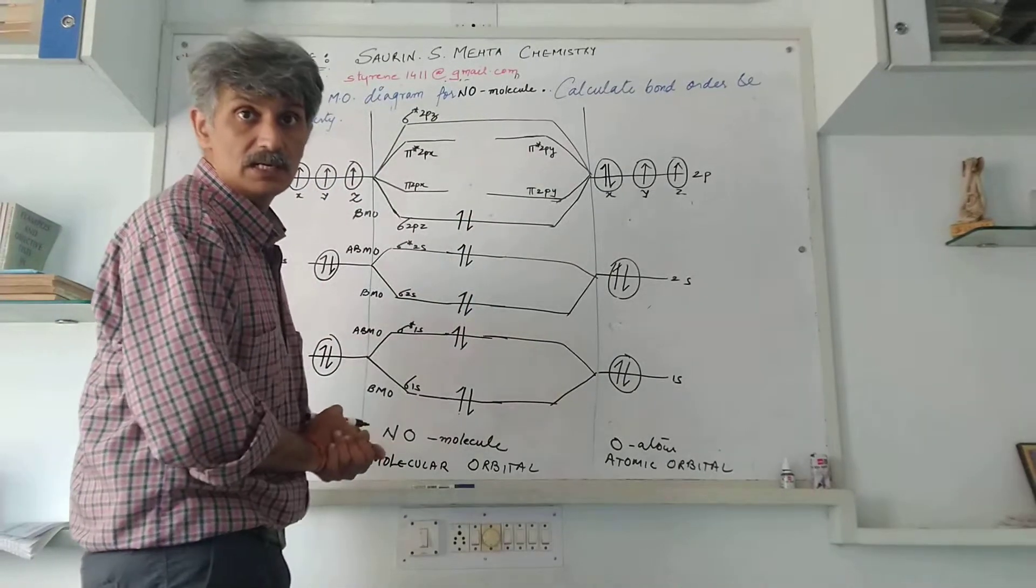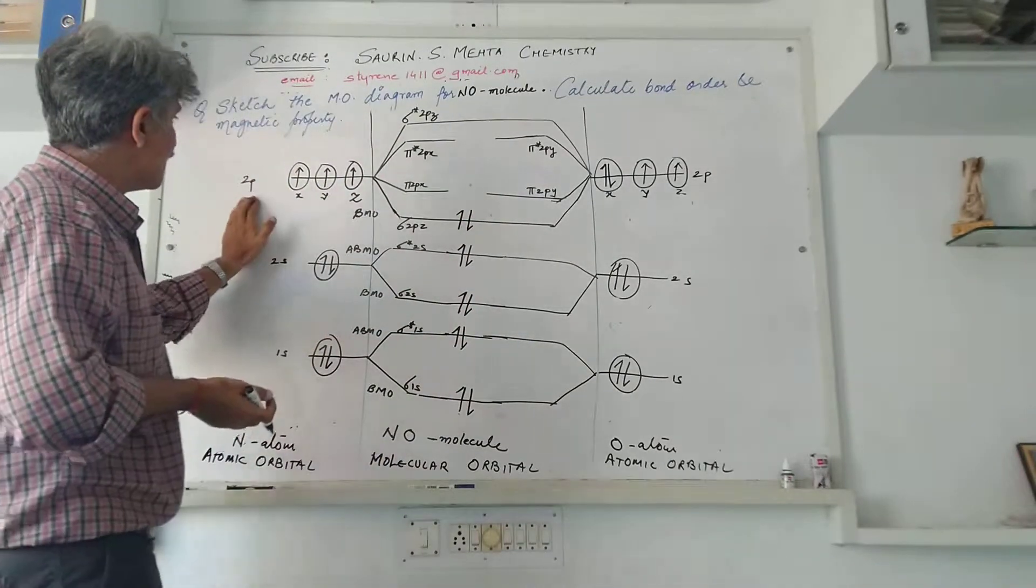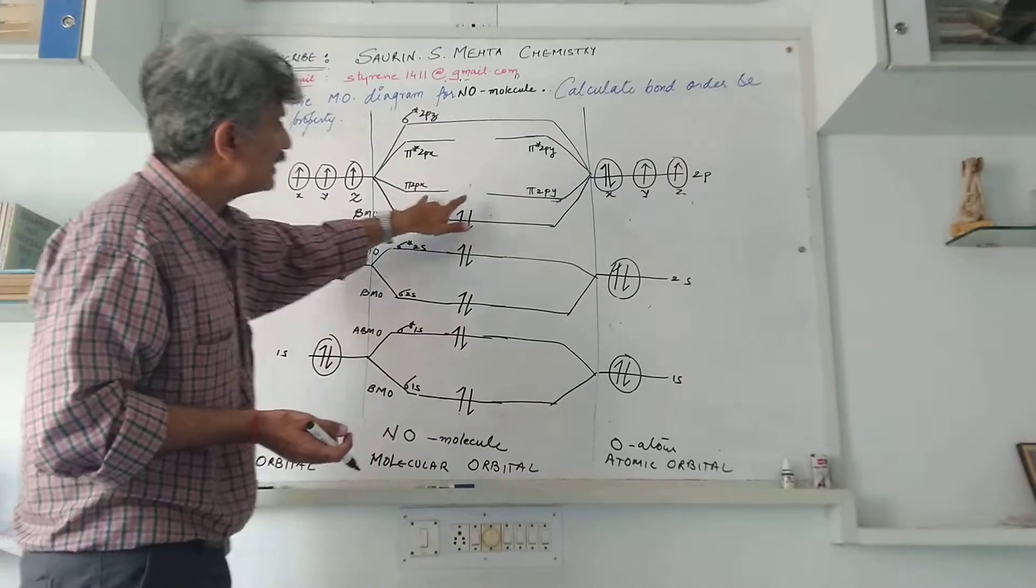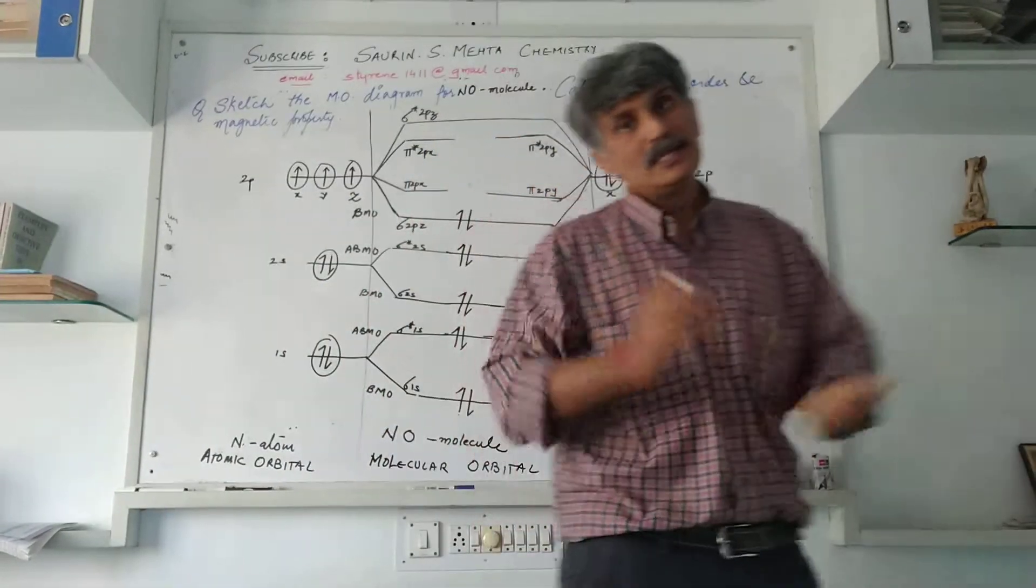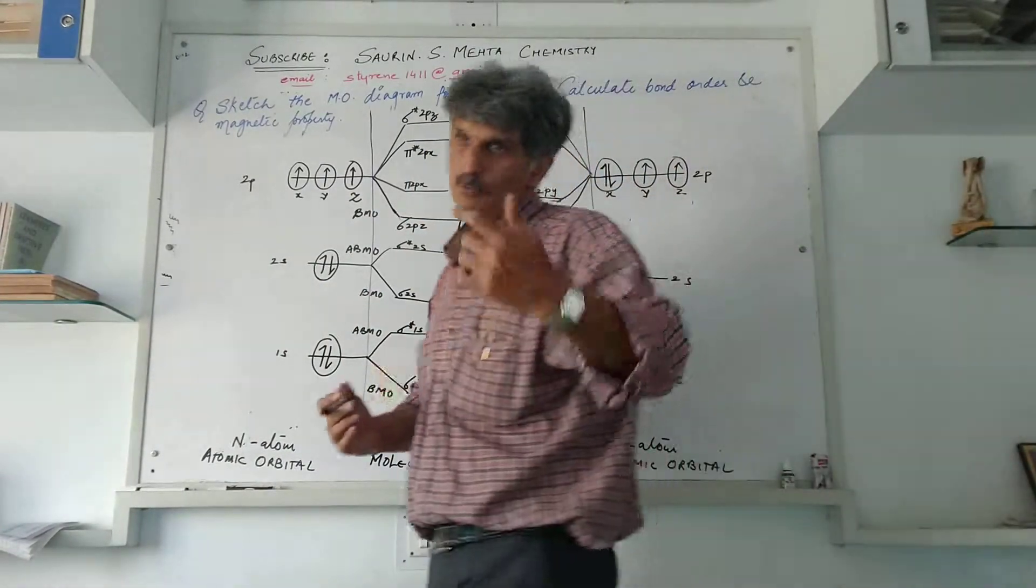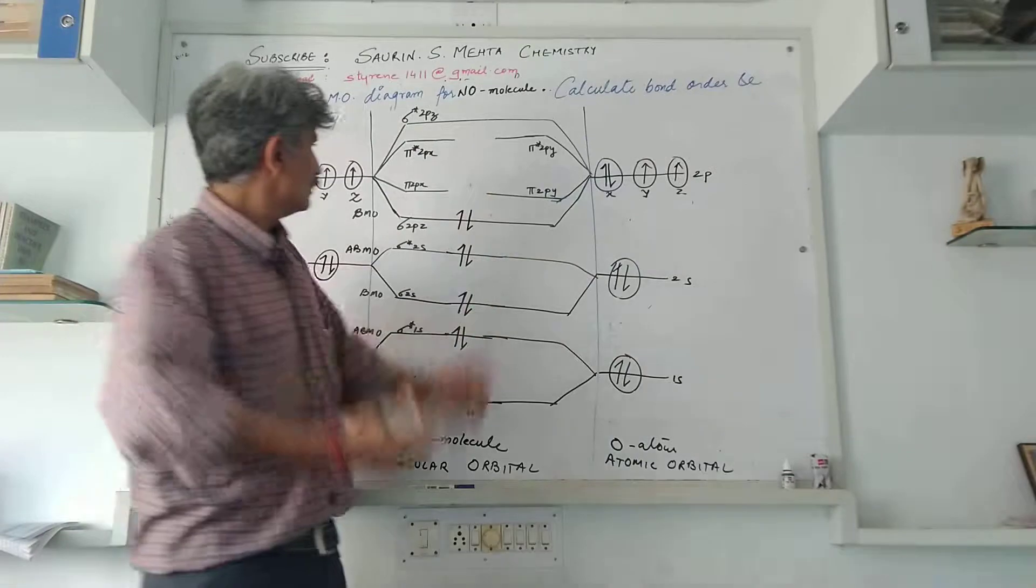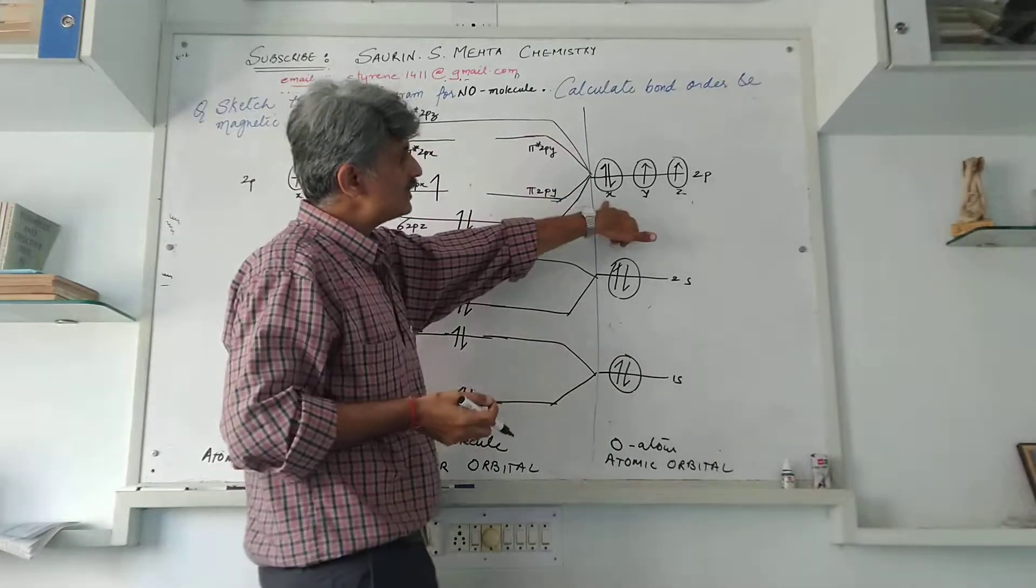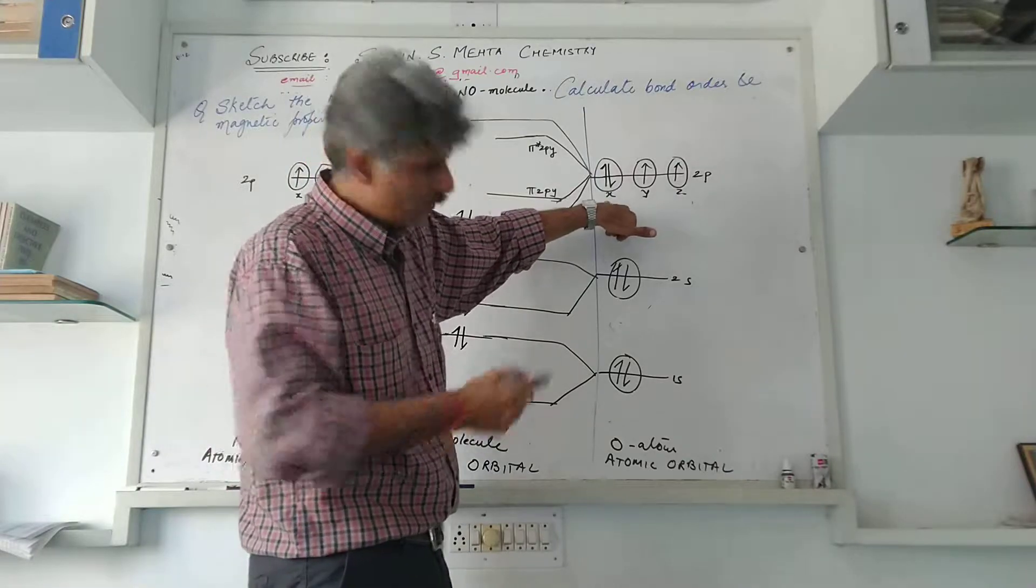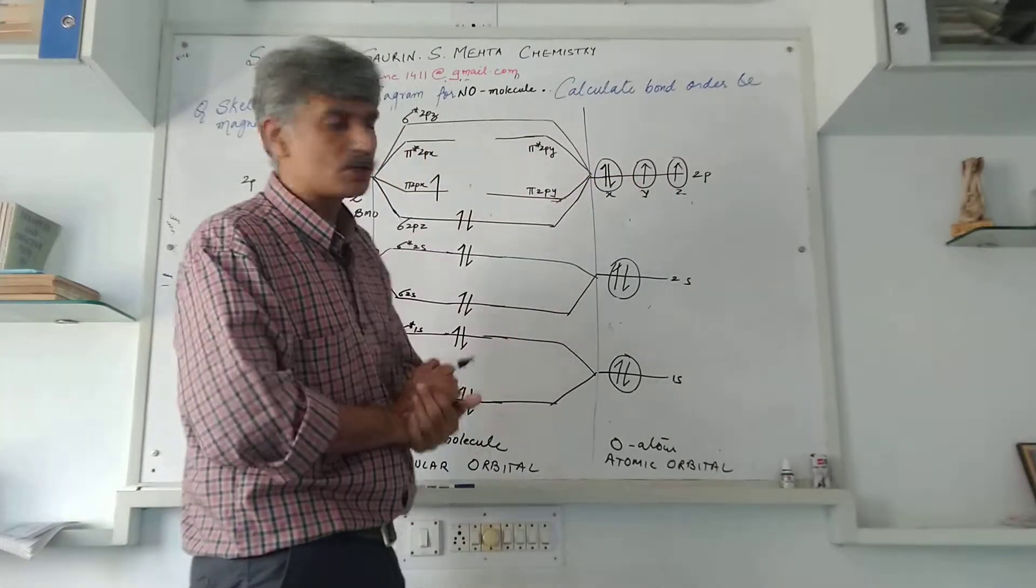As far as the nitrogen 2py is concerned, it has got two open options: one is pi 2px and one is pi 2py. It can get filled up either in pi 2px or pi 2py, there is open option. Let us fill up in pi 2px. As far as the 2p orbital of oxygen is concerned, there is one more electron present in x.